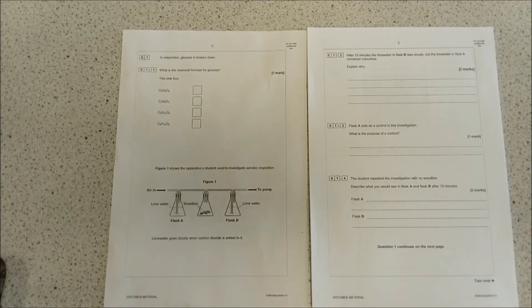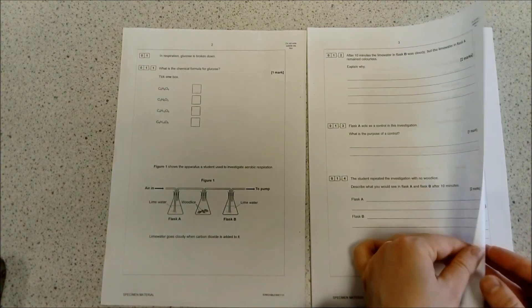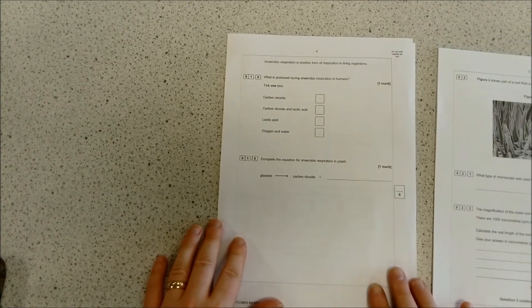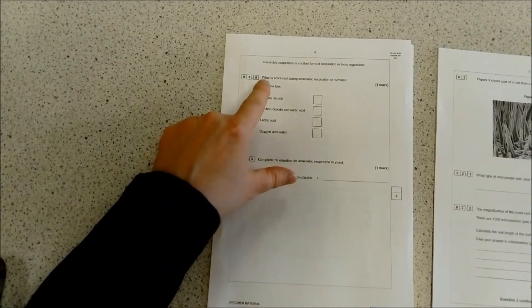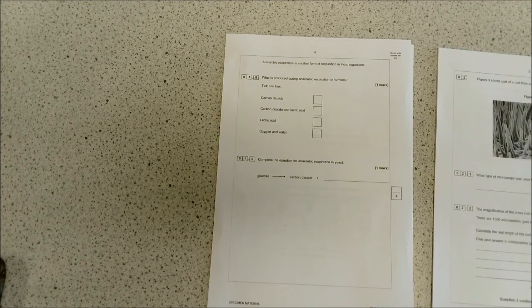To finish off, anaerobic respiration is another form of respiration in living organisms. What is produced during anaerobic respiration in humans? It's lactic acid. You just need to know that, and complete the following equation for anaerobic respiration in yeast.